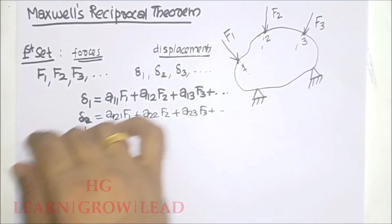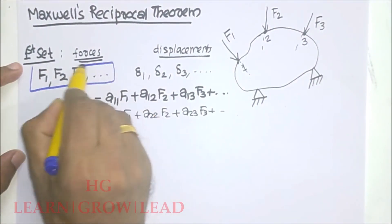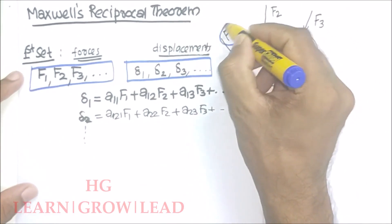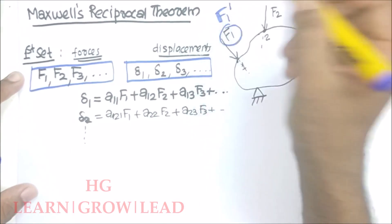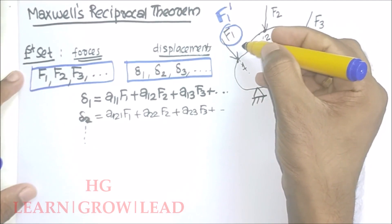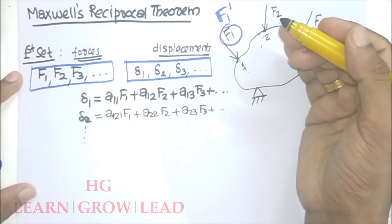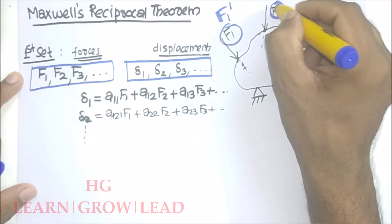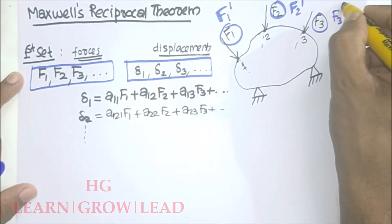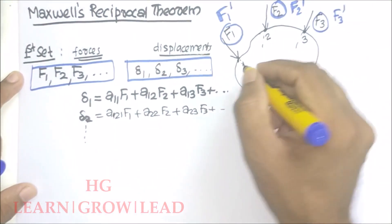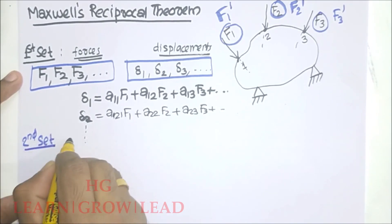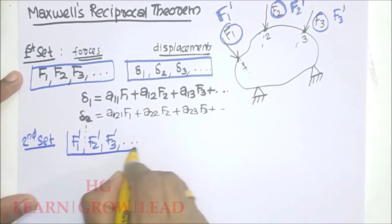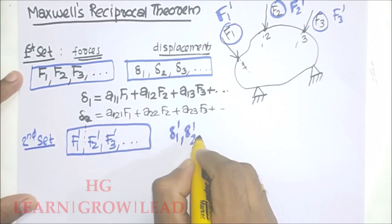Now, I want to consider a second set of forces. I will replace F1 with F1' applied at point 1 in the direction of F1, F2 with F2', and F3 with F3'. The second set of forces are F1', F2', F3', and these forces produce corresponding displacements D1', D2', D3'.